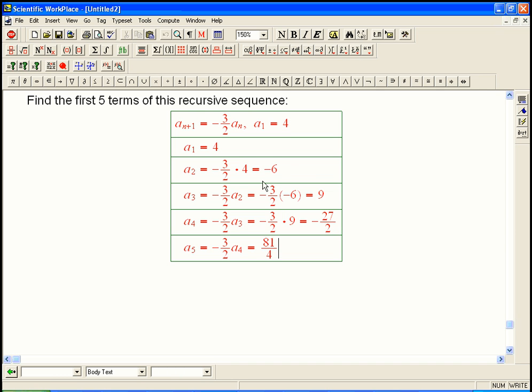Notice that these numbers are getting bigger in size each time because I'm multiplying them by something whose absolute value is bigger than one. They're flipping in sign as well, but the size of the number is getting bigger. And it's growing in a geometric progression.